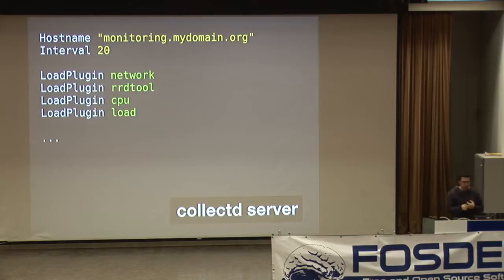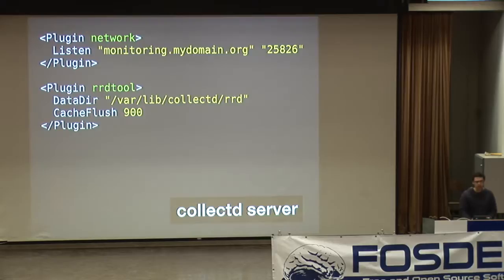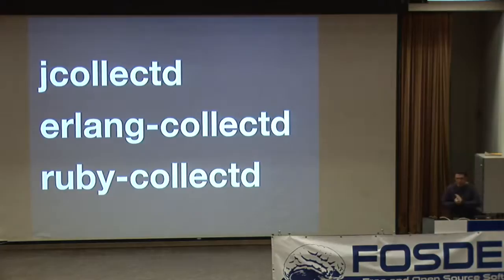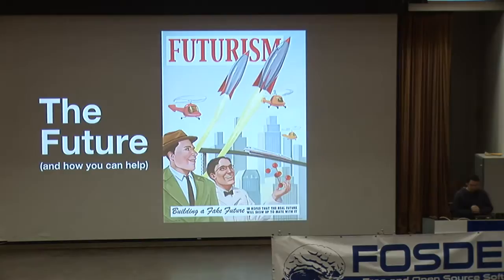On the server at monitoring.mydomain.org, you collect stats every 20 seconds, use the network plugin listening on a particular address, and write all incoming statistics using RRDtool to a particular directory, holding on to them for 900 seconds before flushing to disk. You can also use RRDcached for large volumes of statistics. Another awesome thing about collectd is that there are language bindings for the network protocol, meaning within your applications you can instrument statistics from your web app or Tomcat app and send them over the network to a running collectd instance — without having to build all sorts of extra infrastructure.